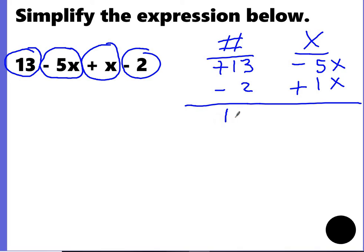Positive 13 minus 2 is 11, and a negative 5 plus 1 is a negative 4x. So that's your answer right there.